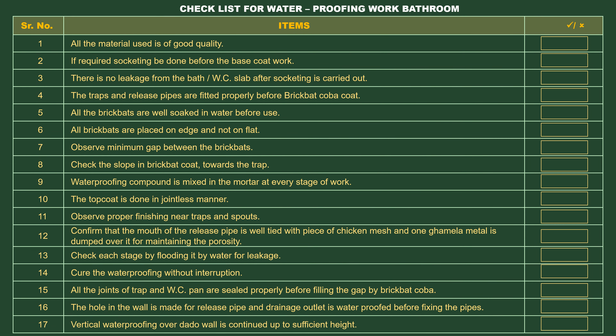Checklist for Waterproofing Work – Bathroom. Decide and check the quality of waterproofing materials. Check the process. It is important to check by flooding with water for leakages. All plumbing holes and connections need to be water-tanked. Continue treatment up to the vertical dead-off.